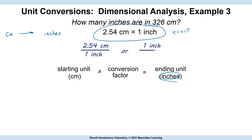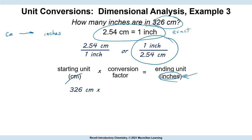Here are the two possible conversion factors. As you do more of these you'll know which one you need because you want centimeters to cancel and end up with inches. Starting with 326 centimeters, using the conversion factor on the right — centimeters in the denominator cancels with centimeters — and we end up with inches. Punch this into your calculator and make sure you get 128 inches.